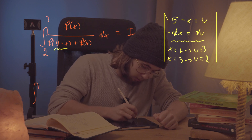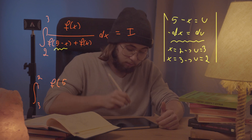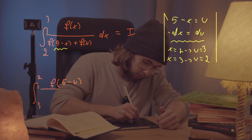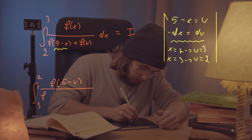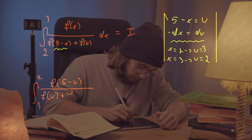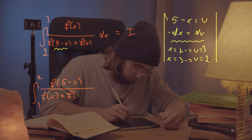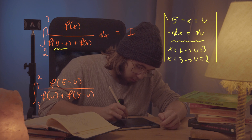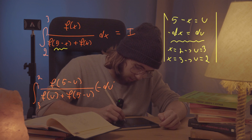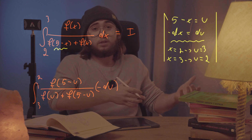After this substitution we get the integral from three to two of f of five minus u over f of u plus f of five minus u, and then du. However, du was equal to negative dx, so it's negative du as well.